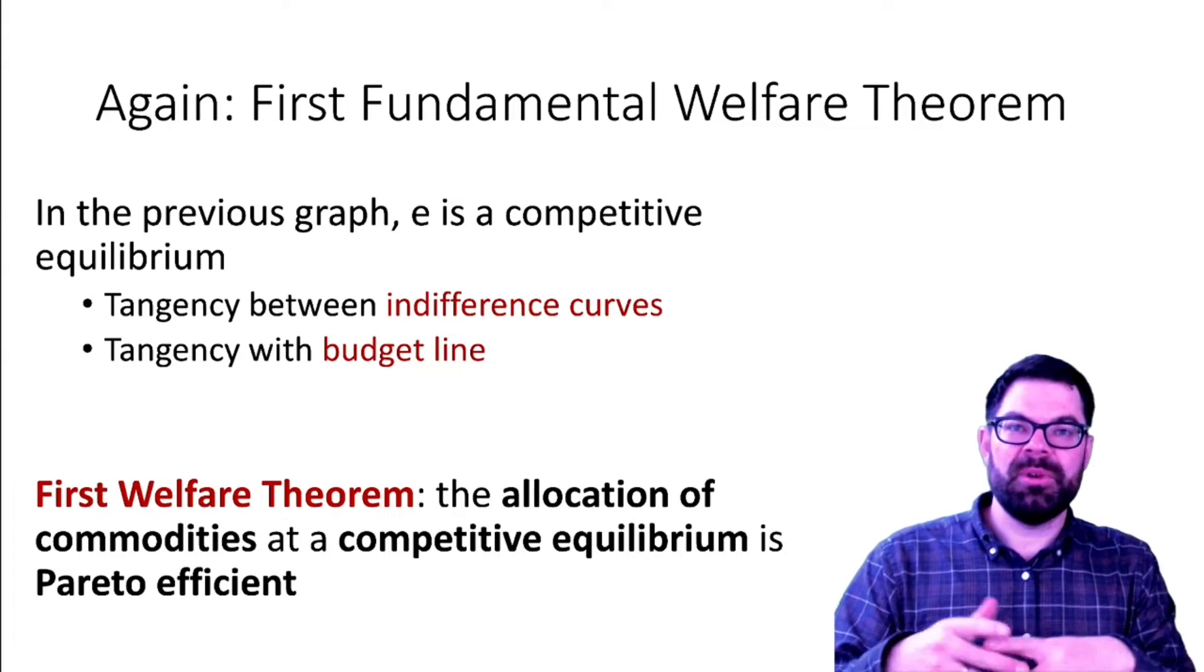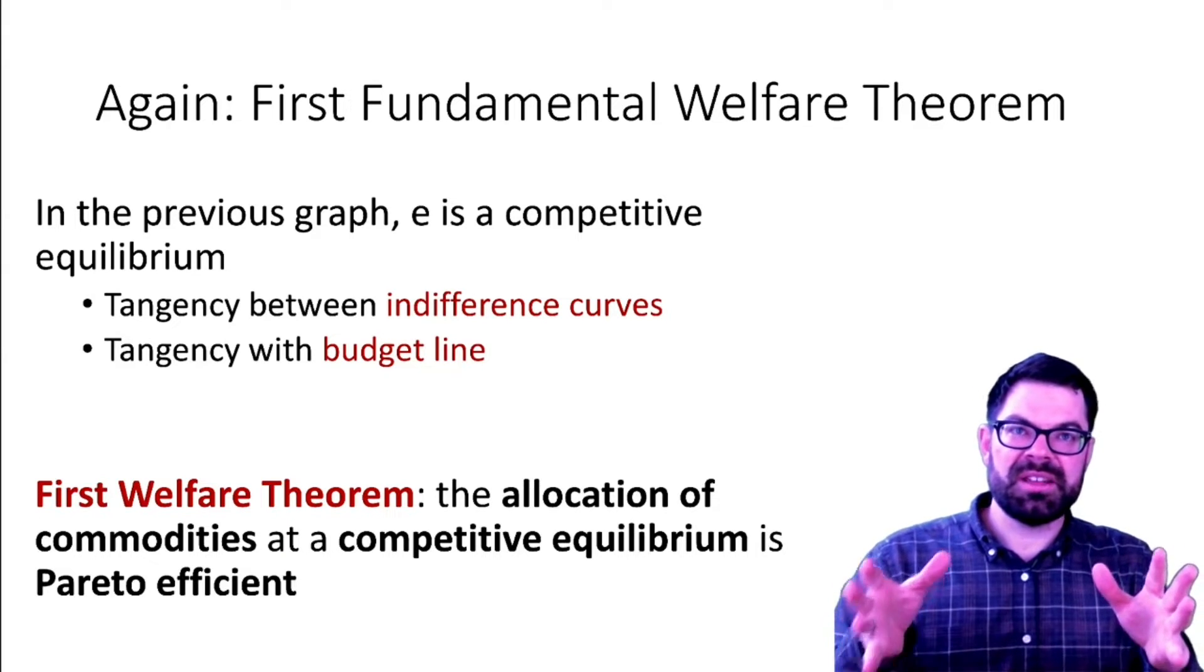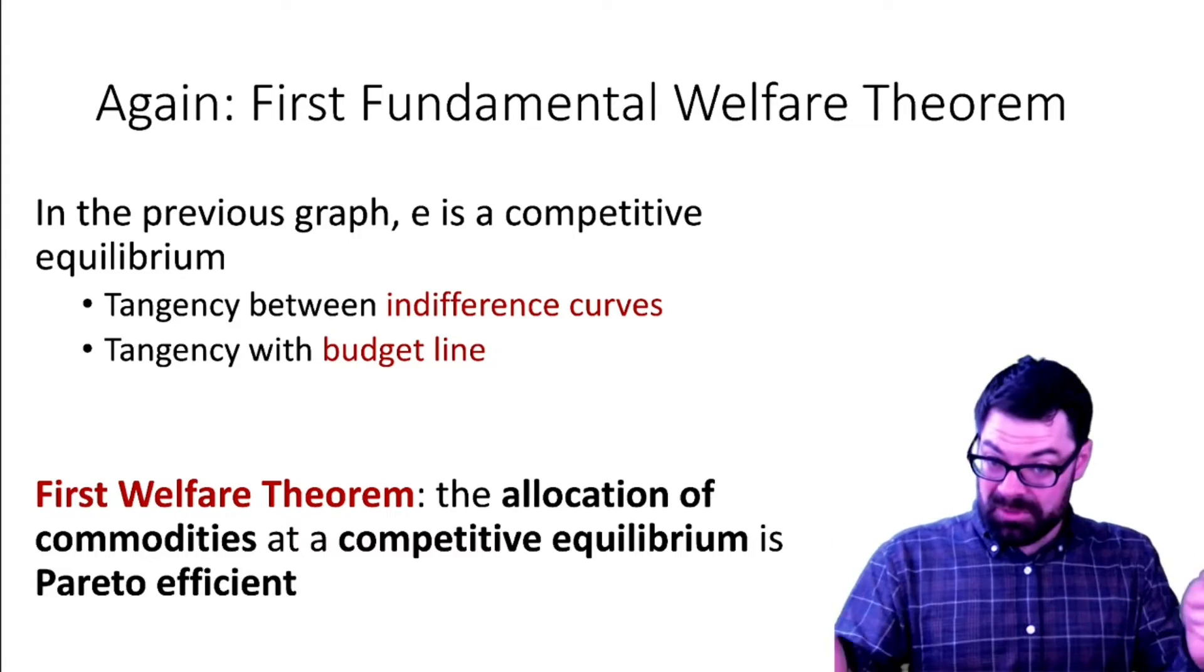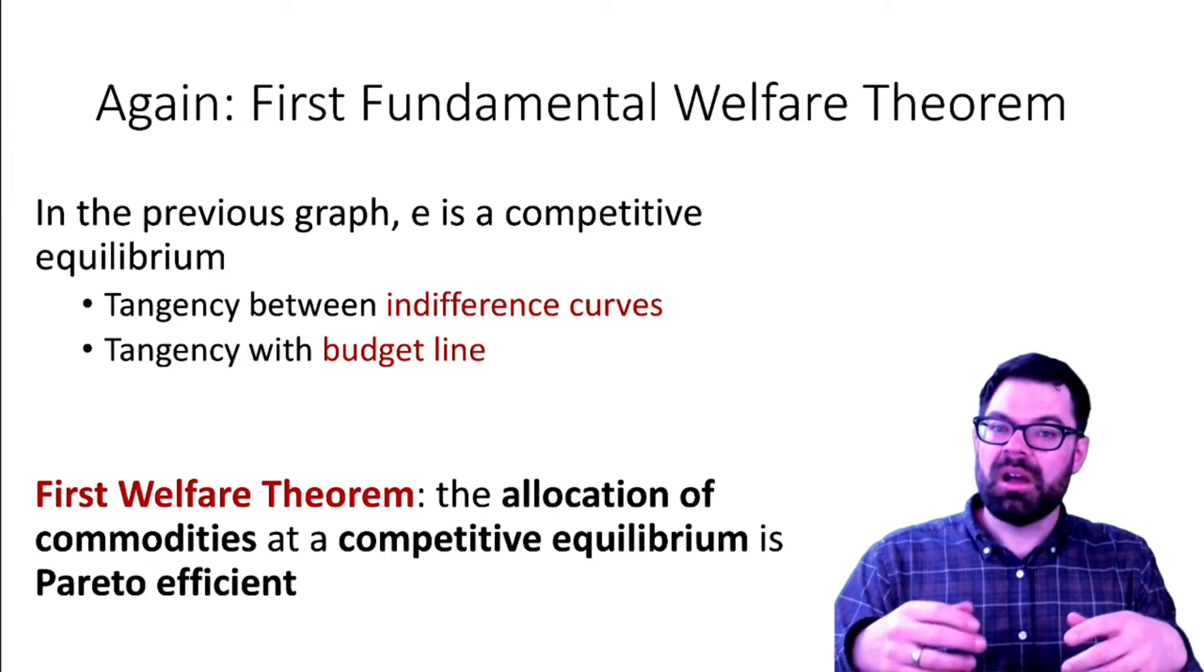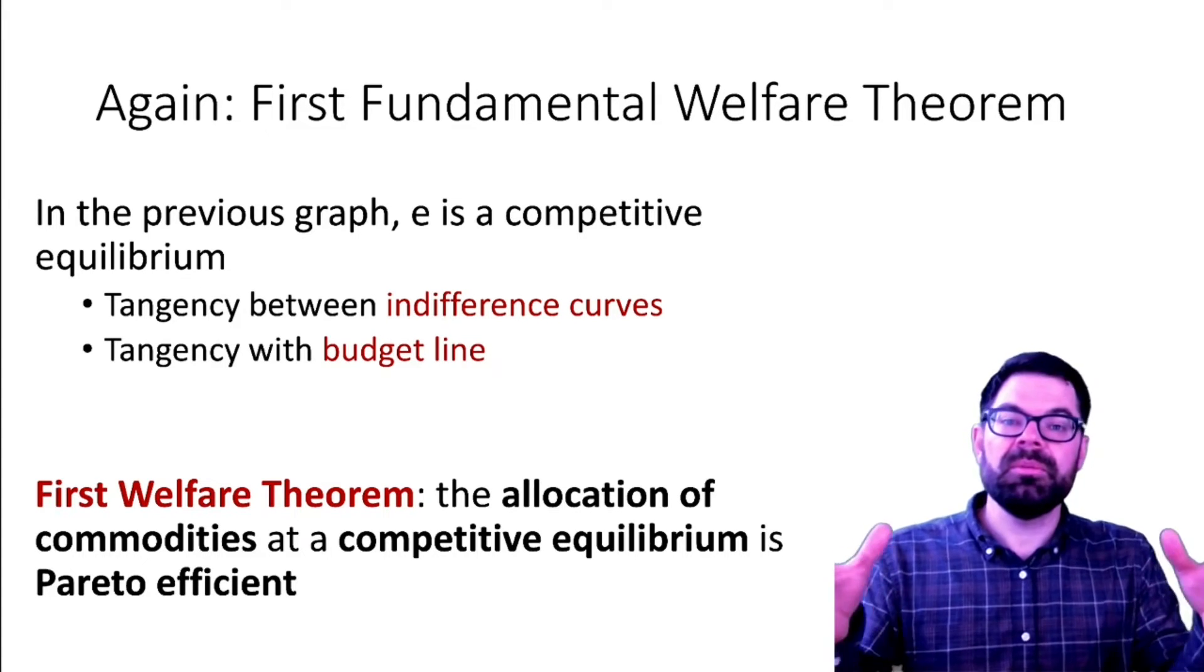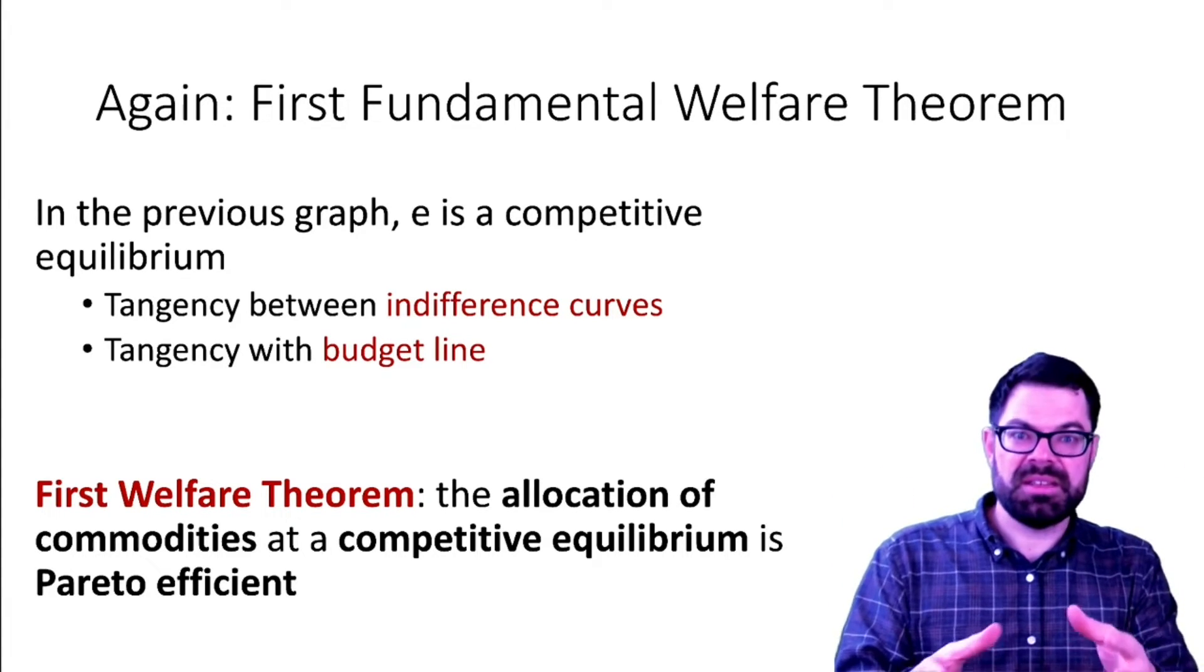So the size of the pie without an intervention in this simple economy is maximized and the allocation we're getting is Pareto efficient. And then in one of the next videos, we will think about under what conditions can we actually achieve a more equitable distribution of consumption without harming the economy, that is without shrinking the size of the pie.